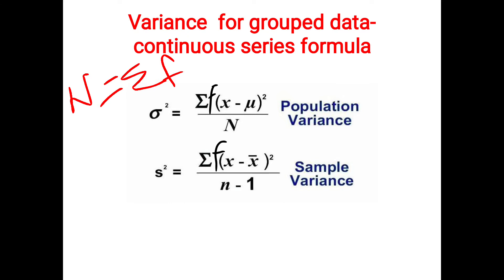Next, s square — that is sample variance — small s square is equal to summation of f into (x minus x-bar) whole square, divided by n minus 1. In population variance, it is x minus mu, where mu is the arithmetic mean of the given population. X-bar is the arithmetic mean of the given sample. So mu and x-bar both represent the mean, but x-bar is for sample and mu is for population.